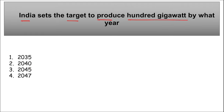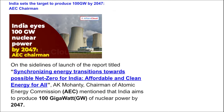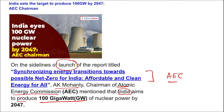Next news: India sets a target to produce 100 gigawatts of nuclear energy by which year? The target is 2047 — in this year India will achieve 100 years of independence, and that is the reason 100 gigawatts of nuclear energy will be produced. This was mentioned on the sidelines of a report launch by AK Mohatti, who is the Chairman of the Atomic Energy Commission (AEC).